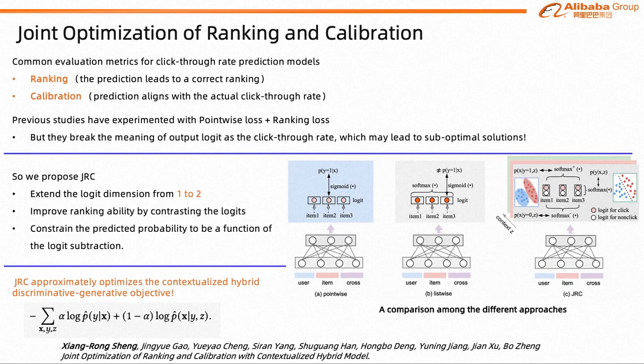Previous studies have experimented with the direct combination of the two losses—that is, point-wise loss plus ranking loss—to obtain the benefits from both losses.